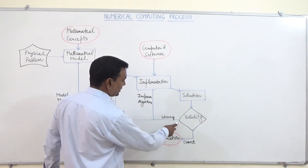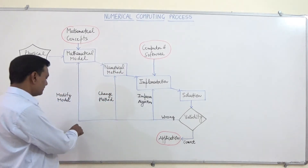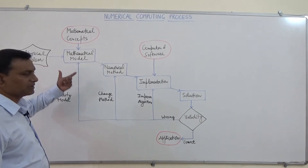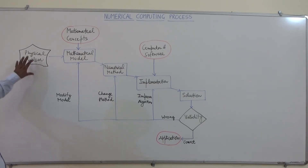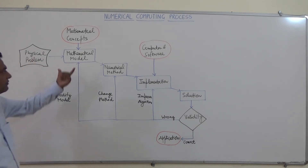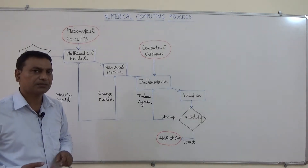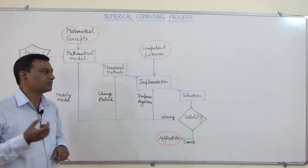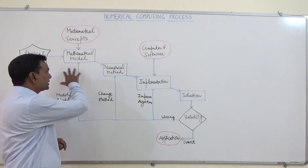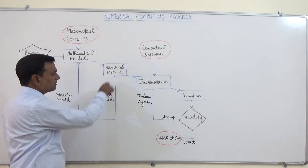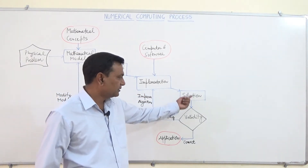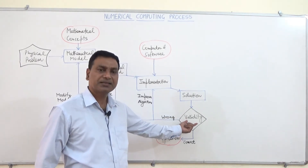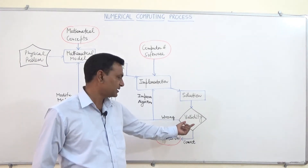If we are not getting the results up to mark, we will go back. There is a possibility that we could not understand the real-time physical problem very well. So we review the physical problem again, and for this we may make the mathematical model again or make some minor modifications in the mathematical model. After making changes, we make the numerical method again.